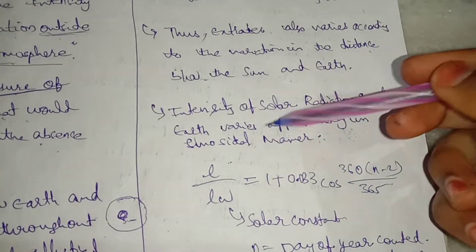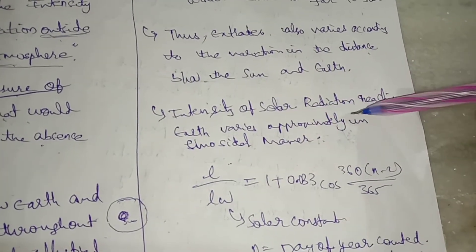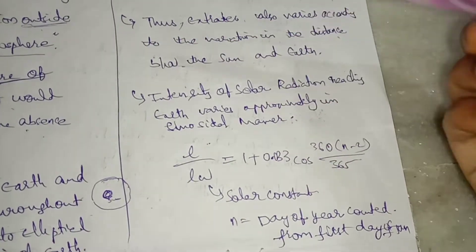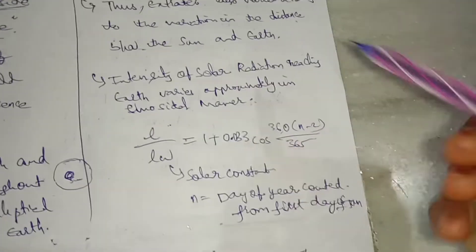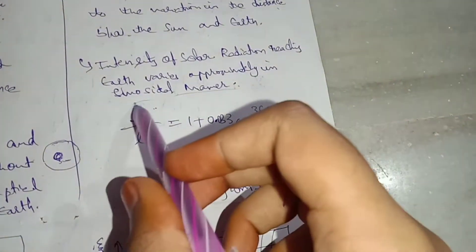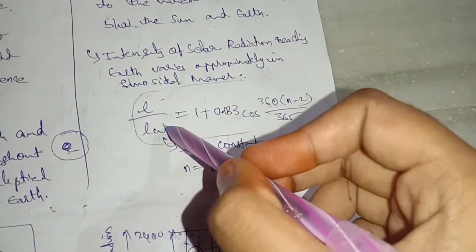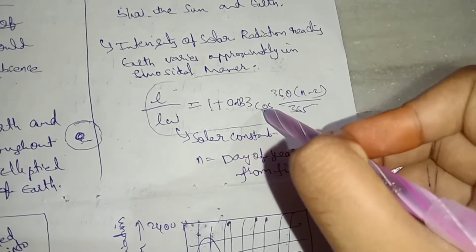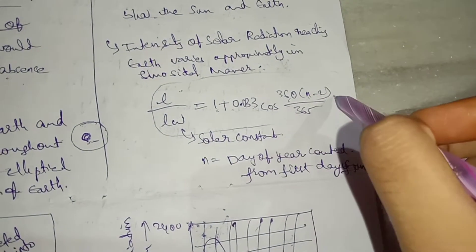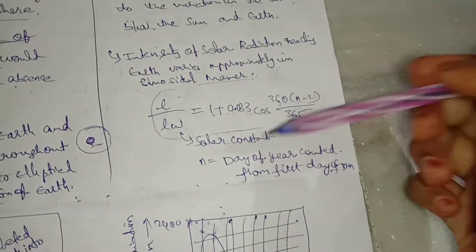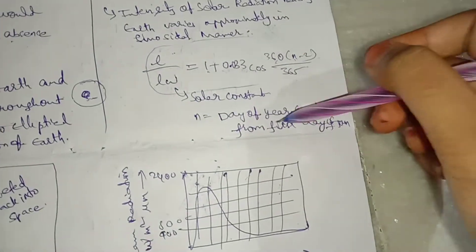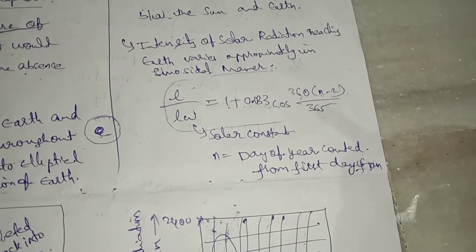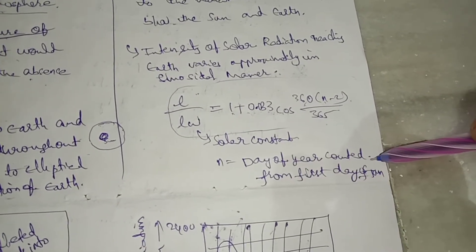The intensity of solar radiation reaching the earth varies approximately in a sinusoidal manner. The formula for extraterrestrial solar radiation follows a sinusoidal wave formula: N_w equals the solar constant times 1 plus 0.033 cos(360 × (n − 2) / 365), where n is the day of the year counted from the first day of January.